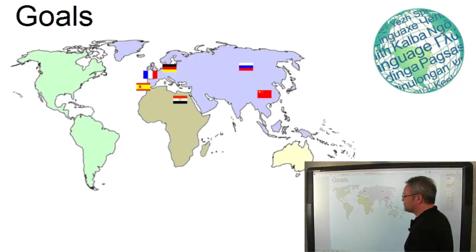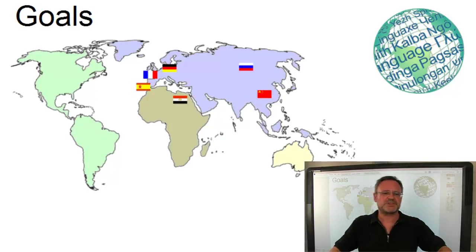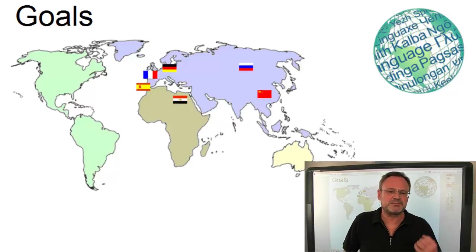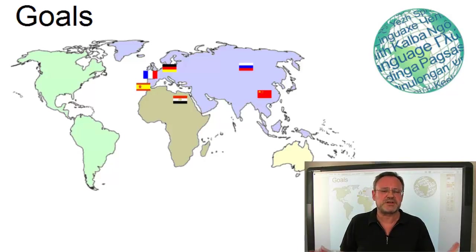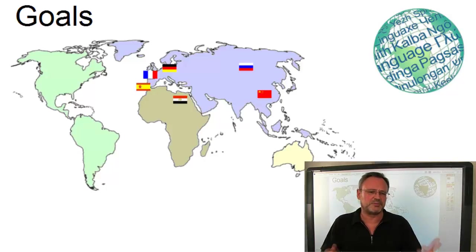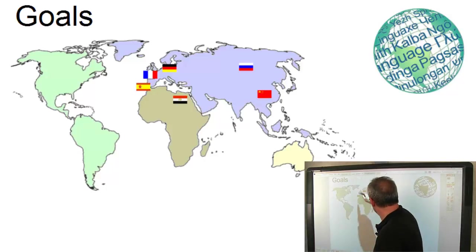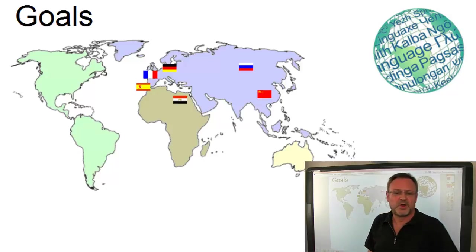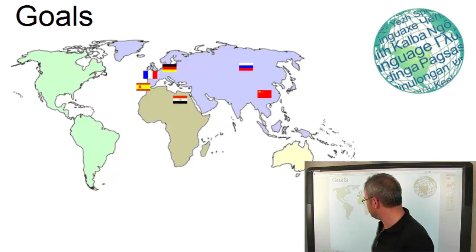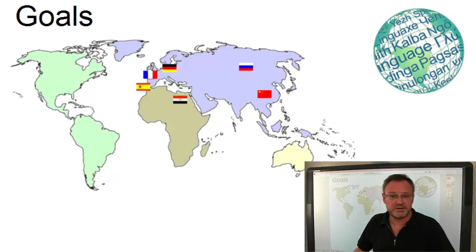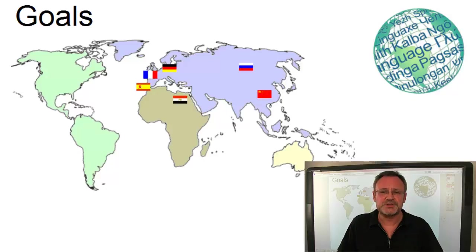Thus, our MOOC is contrastive. It compares English with the target language and outlines the main problem zones for the native language learner. Since it is impossible to include the linguistic principles of all 7,000 human languages, we will focus on six of the most important ones, where the flags put on this map only represent the heartlands of the language. Think about the Spanish speakers in South America and you will understand how many speakers and learners will be affected by our MOOC.